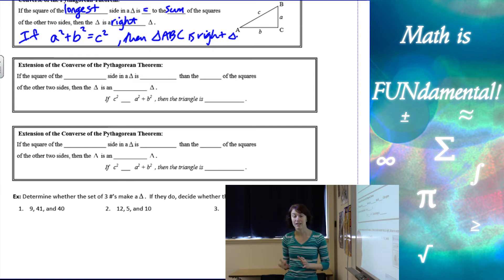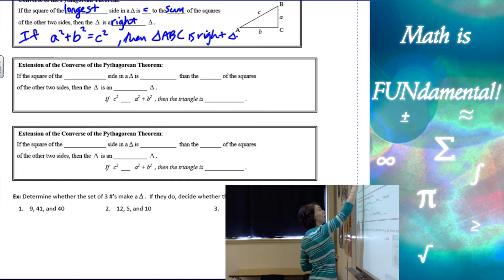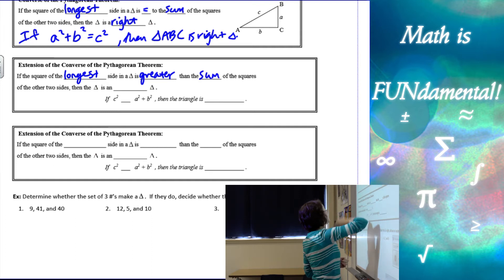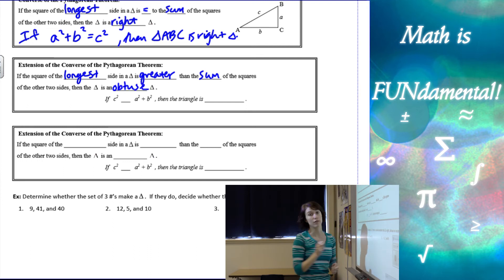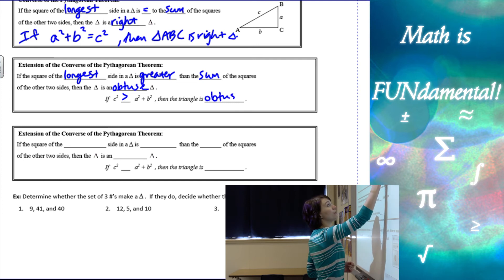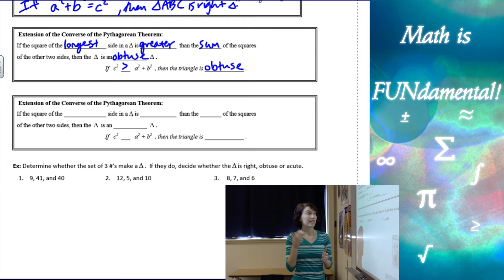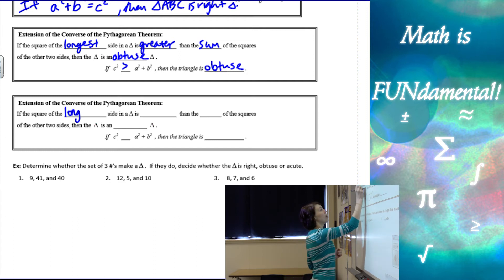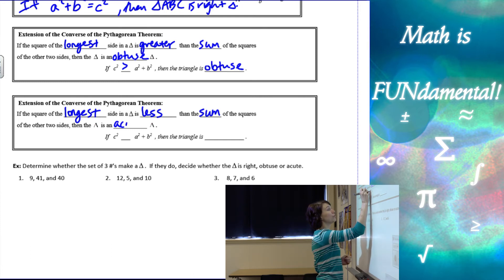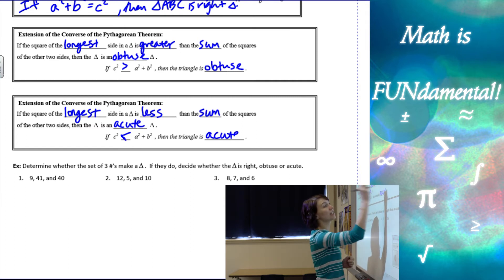An extension of the converse gives us ways to figure out what kind of triangle it is if it isn't a right triangle. If the square of the longest side is greater than the sum of the squares of the other two sides — c squared is greater than a squared plus b squared — then it's going to be an obtuse triangle. Similarly, if the square of the longest side is less than the sum of the squares of the other two sides — c squared is less than a squared plus b squared — then it has to be an acute triangle.